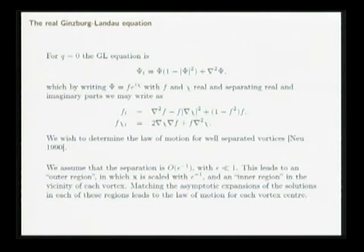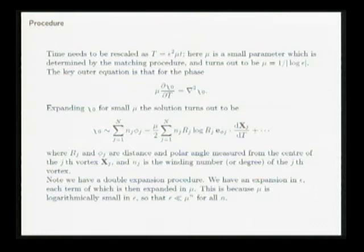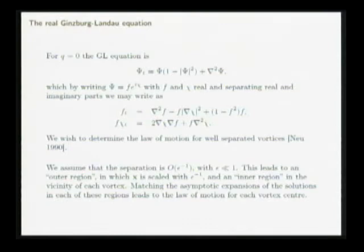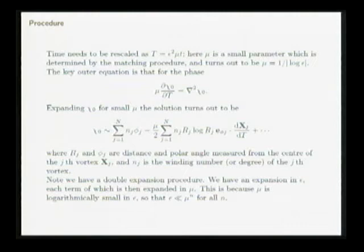I'm not going to show you all the details — students here last week will have seen this worked out for the Ginzburg-Landau equations in superconductivity, and the analysis is very similar. The key equation determining motion: motion happens on a slow time scale, so time has to be rescaled with epsilon squared times mu. The epsilon squared comes from going to the outer length scale bringing an epsilon squared in front of the Laplacian. The mu is harder to motivate until you see the answer — it's another small parameter determined by matching, and it turns out to be logarithmically small in epsilon: mu equals one over log epsilon.